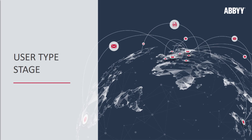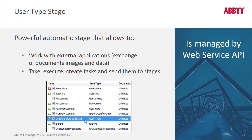And the user type stage — this is a powerful automatic stage that allows one to work with external applications, execute and create tasks, and send them to stages. It's managed by the web service API, which is well documented in the ABBYY help file.